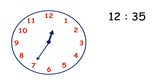Now the minute hand is on the 7, so it's 12:35. You might have noticed that with every number the minute hand moves along, we have another five minutes. So you can multiply the number that the minute hand is pointing to by 5 to get the number of minutes. Here the minute hand is on the 7 and 7 times 5 is 35, so we have 35 minutes.